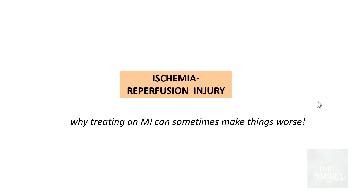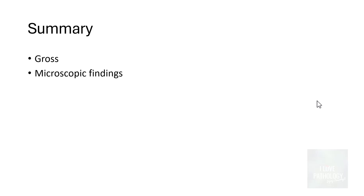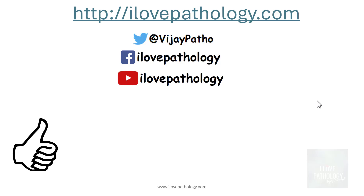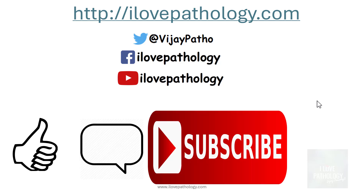Sometimes, when you treat myocardial infarction, it can make things worse — and that is called ischemia reperfusion injury, which is the topic for the next session. We have learned in detail about the gross and microscopic findings of myocardial infarction. Please note this is a very important topic; understanding cellular injury and the progression of necrotic cells makes it simpler to understand the sequence of events after infarction. If you liked this video, hit the like button, comment with any queries, subscribe, and share with your friends.